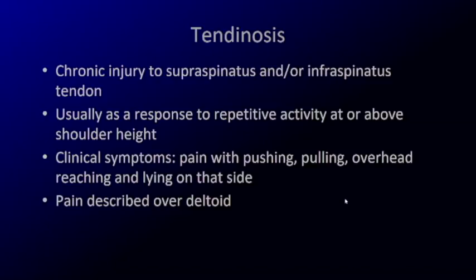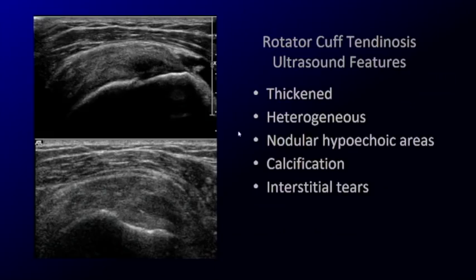Tendinosis will look the same no matter which tendon you look at, so as you build your knowledge, you should recognize it from tendon to tendon or joint to joint. Tendinosis is a chronic injury — it's a degenerative process, usually a response to repetitive activity or overhead reaching. Patients will present with pain, typically burning pain over their deltoid or pain at night when lying on that side.